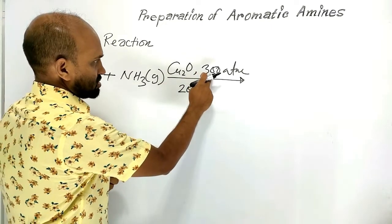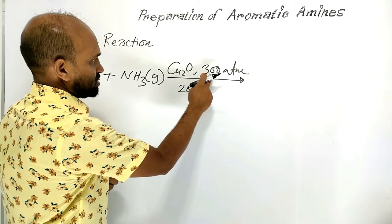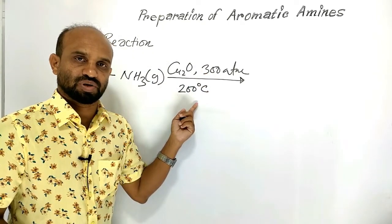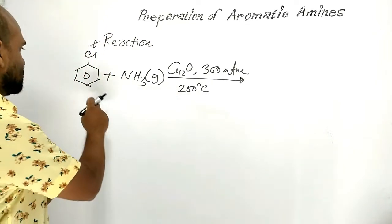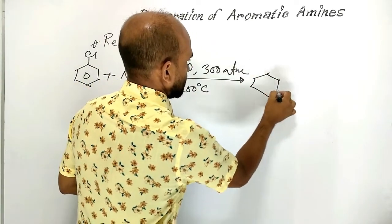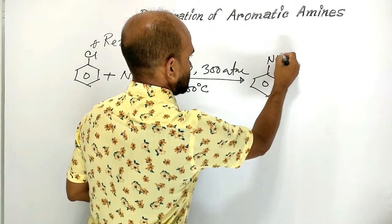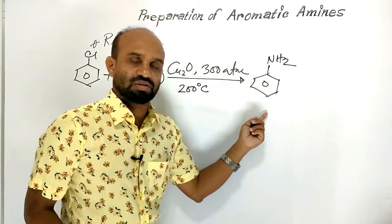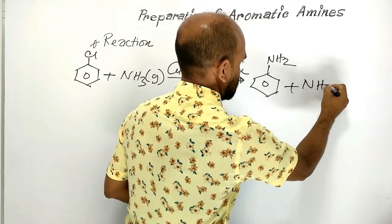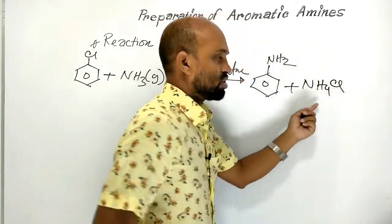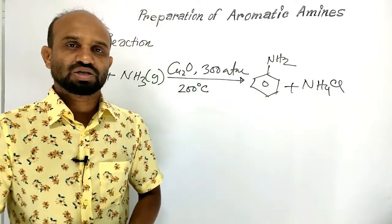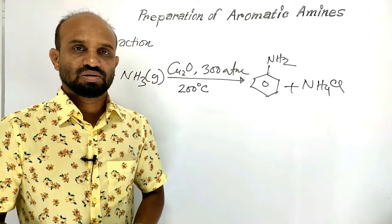When chlorobenzene is treated with ammonia gas in presence of copper oxide catalyst at 300 atmosphere pressure and at 200 degrees Celsius temperature, then chlorobenzene converts to amino benzene, that is aniline, aromatic amine, and ammonium chloride is formed as byproduct. This is the reaction of chlorobenzene.